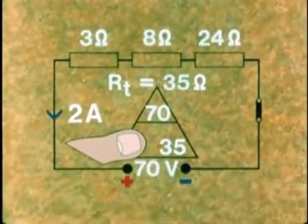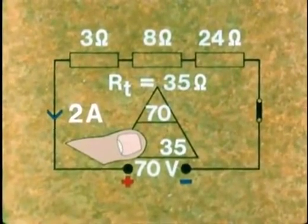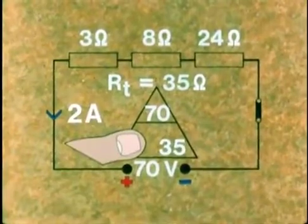So with series resistances, RT equals R1 plus R2 plus R3 and so on.